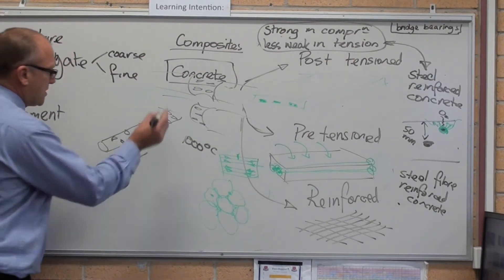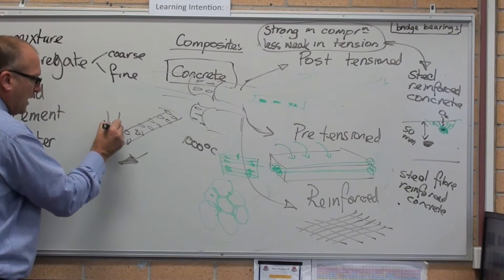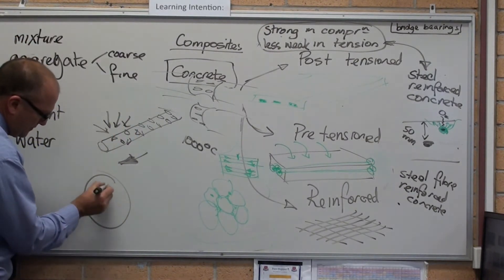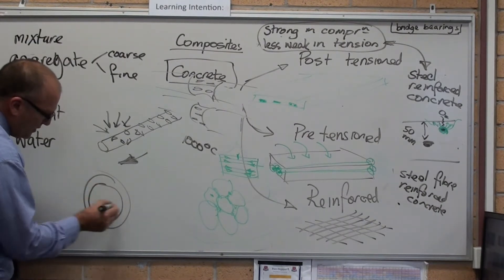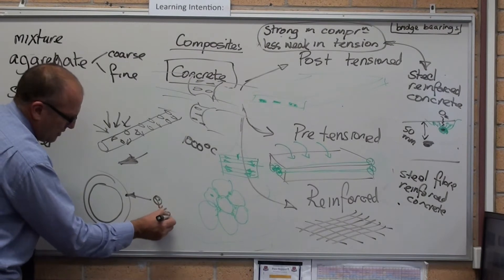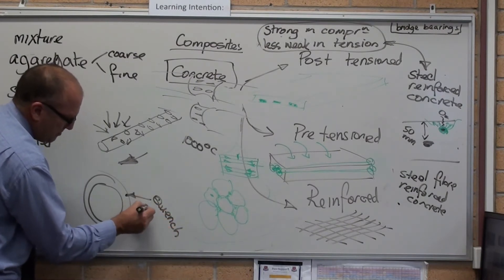They physically, as it's coming out of the mill, they squirt it with water. But only enough water to quench the outside, which makes it martensite.